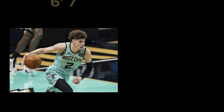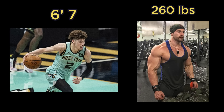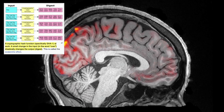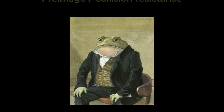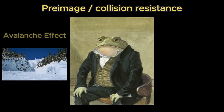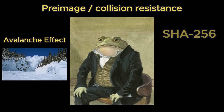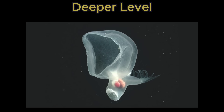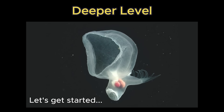Even if you're 6'7", 260 pounds, rich and famous, you should still care about hashing. We'll learn about the universe of concepts surrounding pre-image and collision resistance, the avalanche effect, SHA-256, and break down hashing at a deeper level. Let's get started.